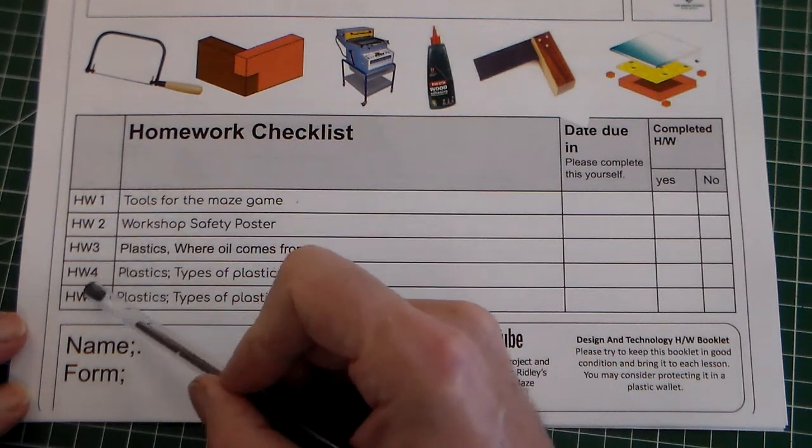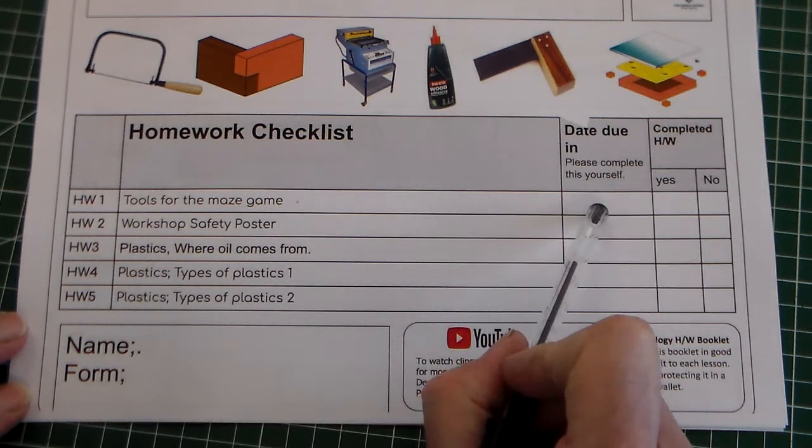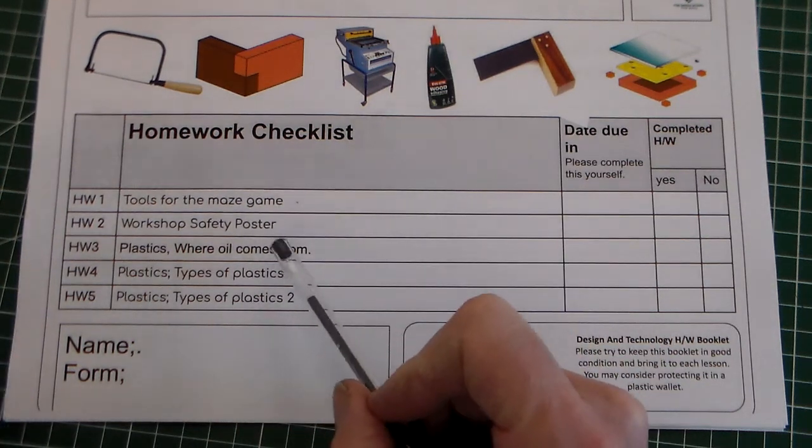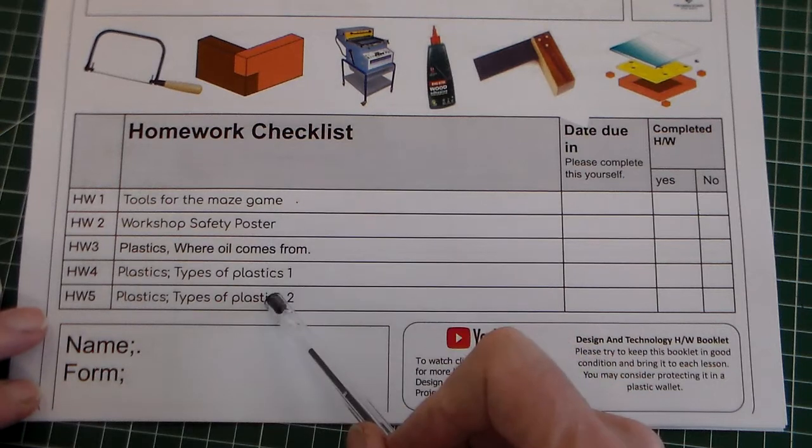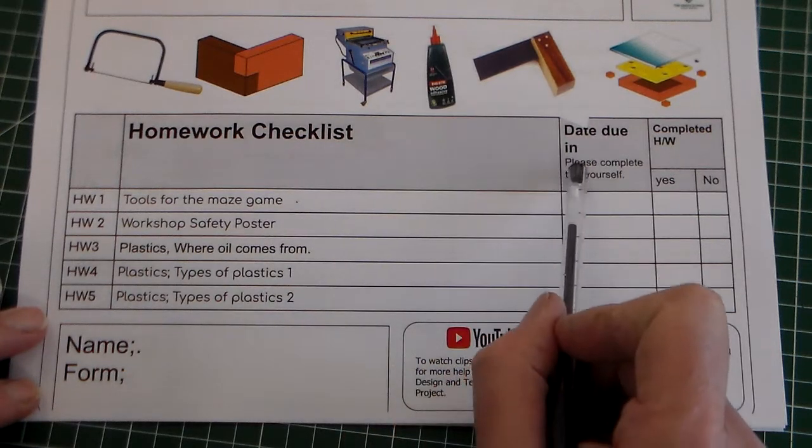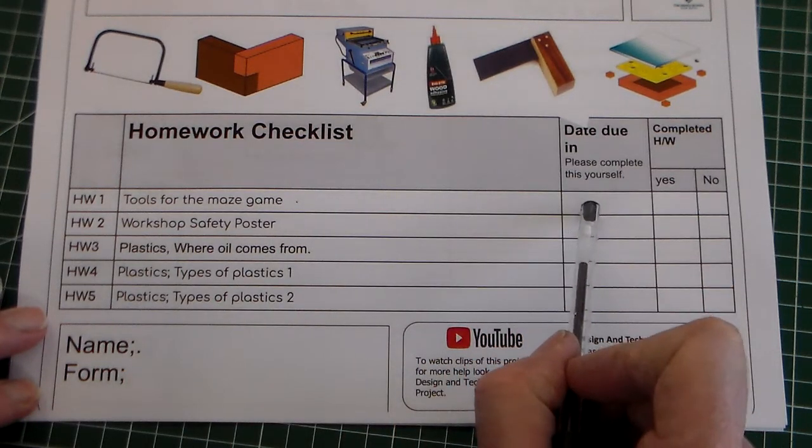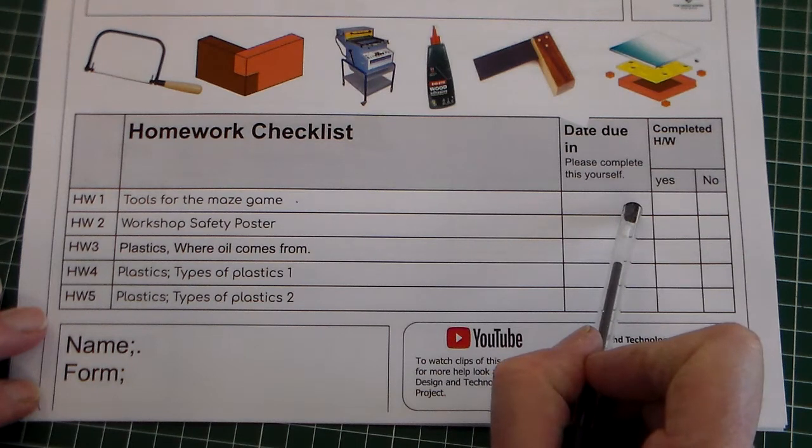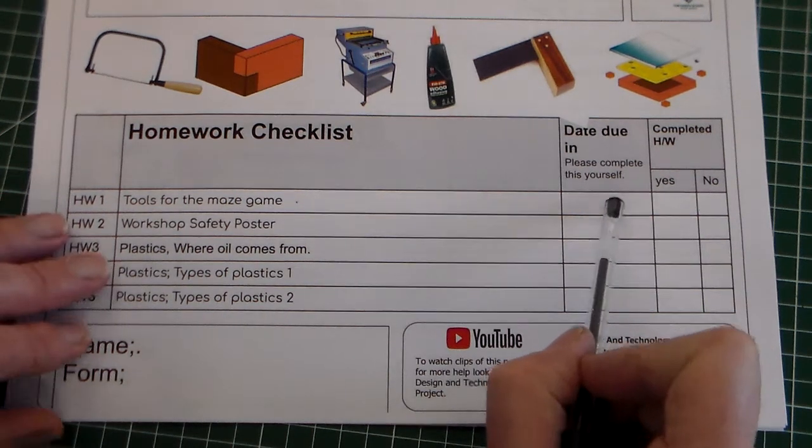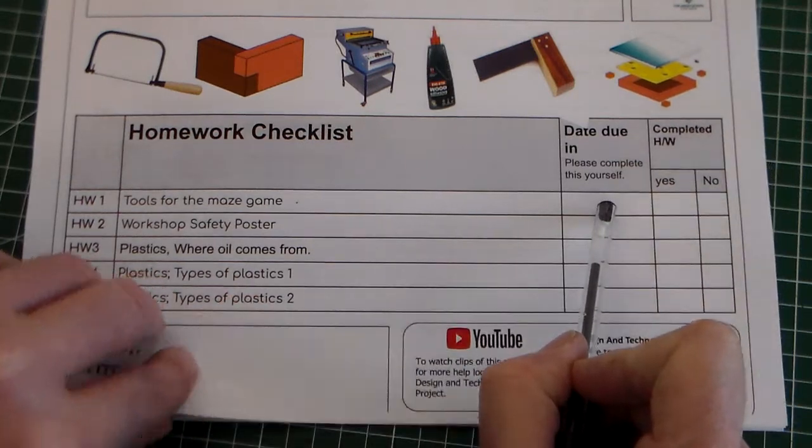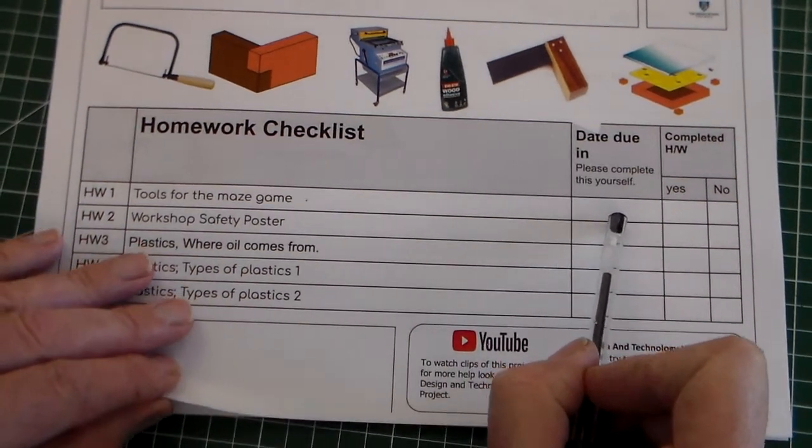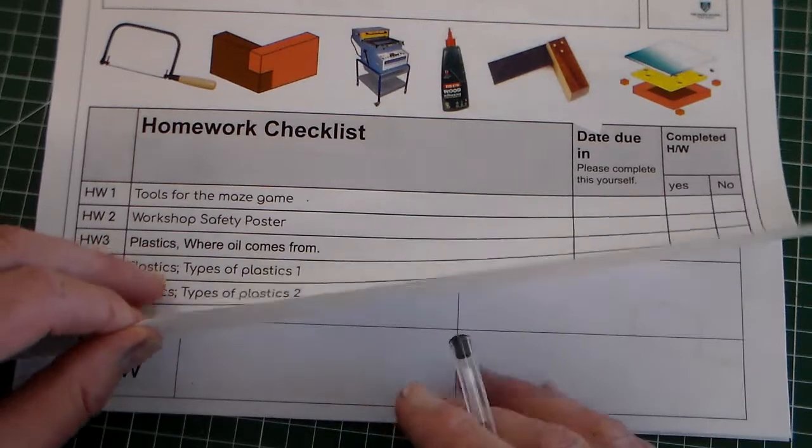We have homework 1, homework 2, 3, 4, 5, and these are the different homeworks that you need to complete. Here is a date due in. You can complete this yourself. When the work is set each lesson you can write here so you know when to do the homework. Let's look at the homeworks and just go through them now.